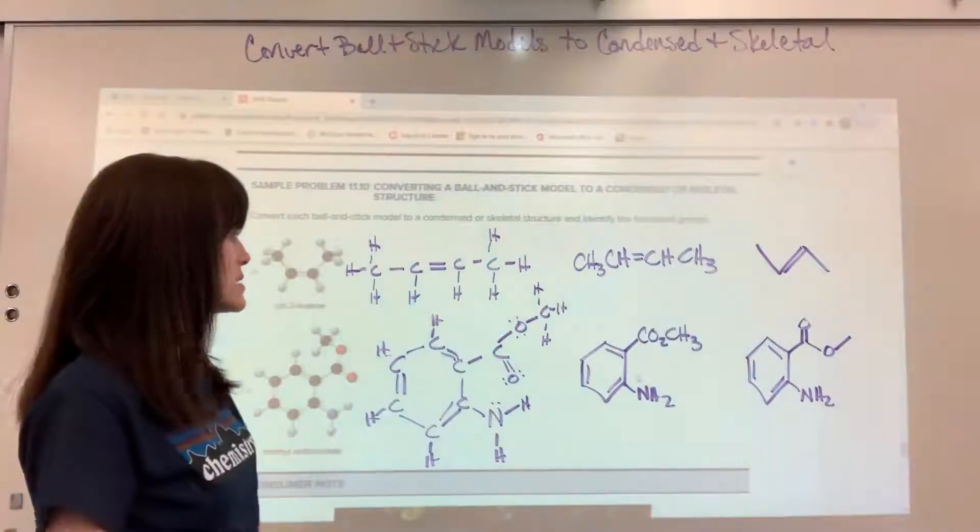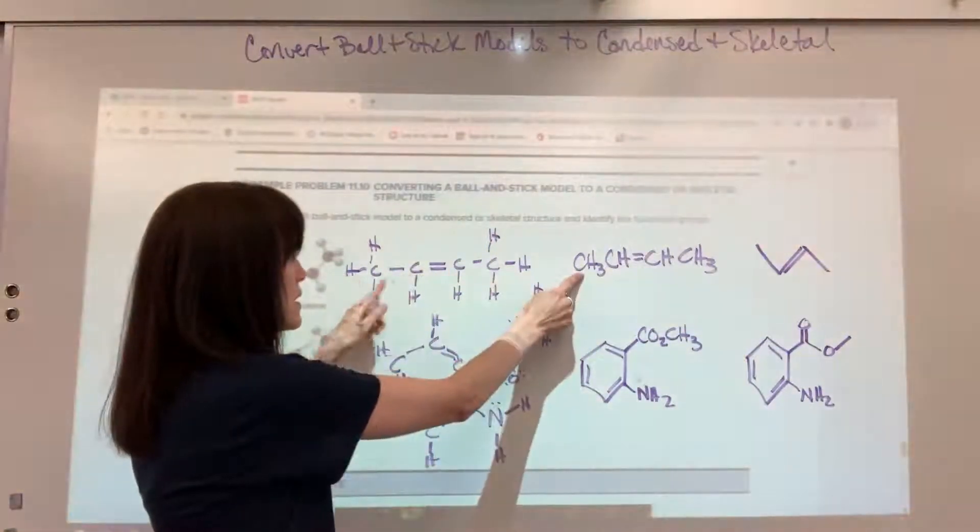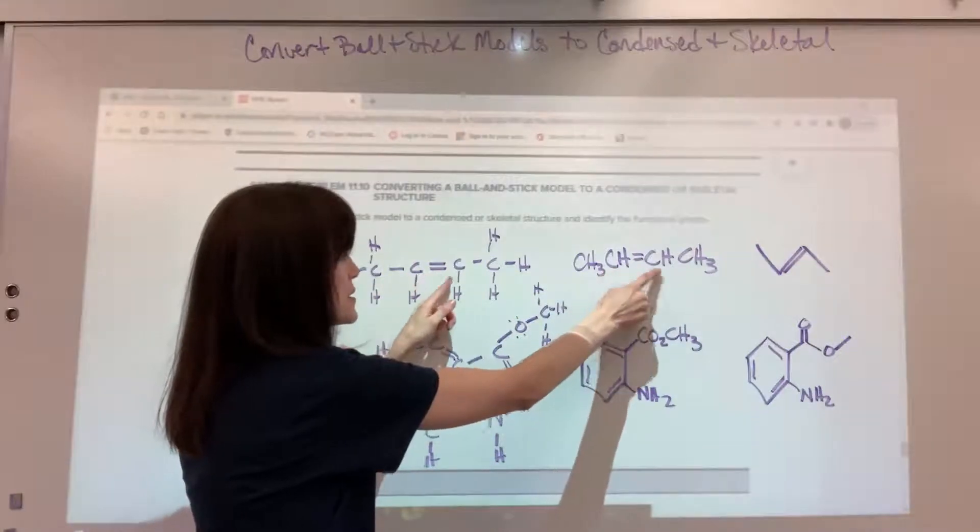Now to write the condensed, I'm just going to take out the single bonds. We have the CH3 and then the carbon double bonded to the carbon, CH and CH, and then that last CH3.